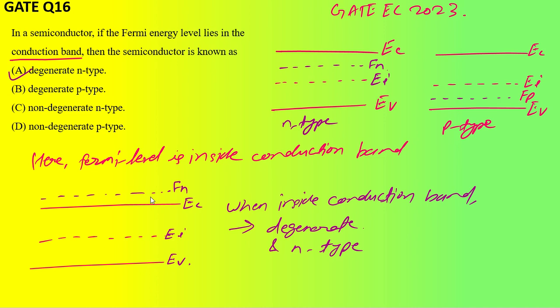If it is inside the conduction band, this is still n-type because here it is p-type and n-type. Simply, p-type you can discard now. If it is below the conduction band, then it will be non-degenerate. If it is inside, then it will start degenerating.